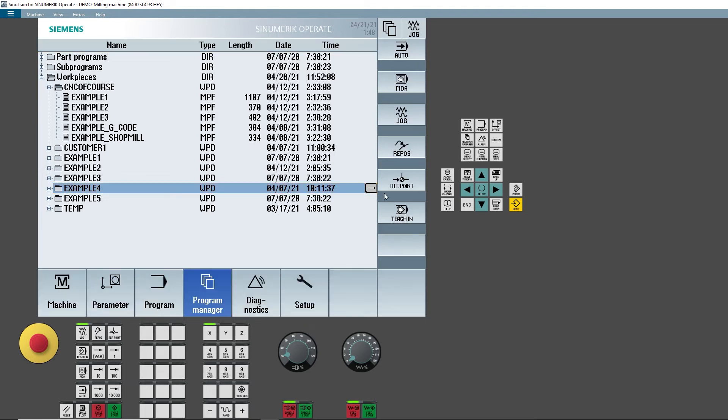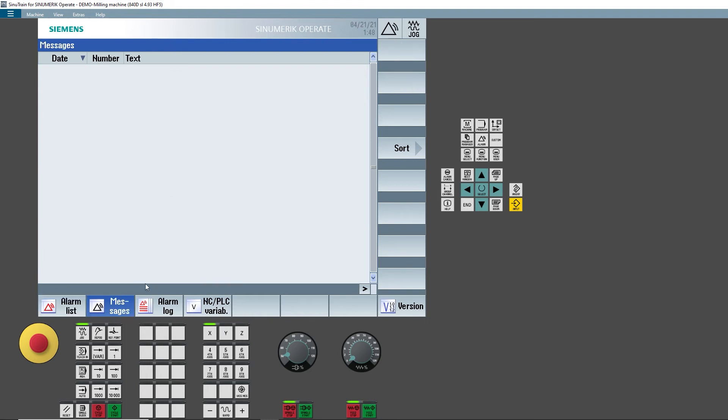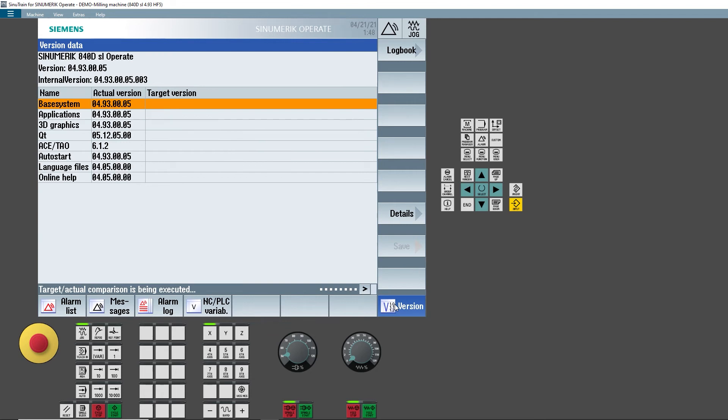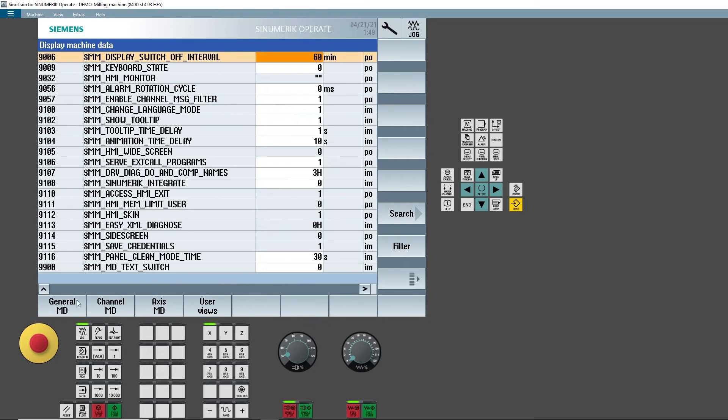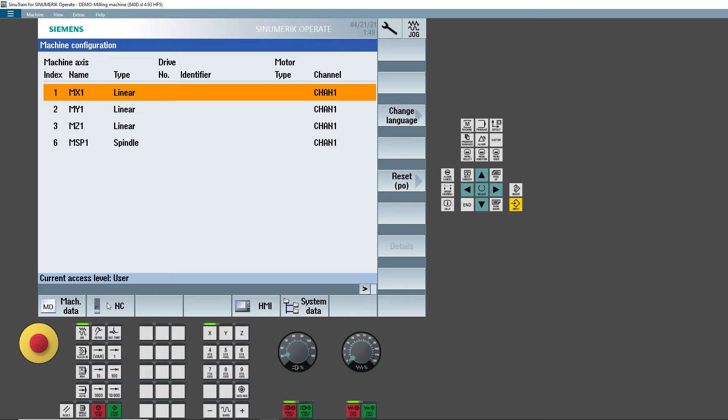The Diagnostic softkey is used to access the windows for displaying and managing alarms and messages. Finally, the Setup softkey is used to access the area mainly intended for maintenance and assistance activities, where all the machine parameters and control configuration parameters are located.